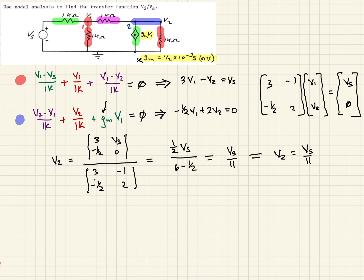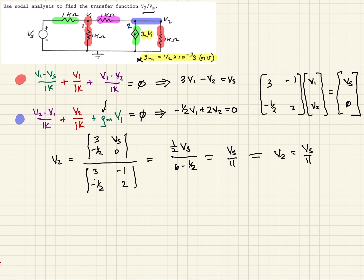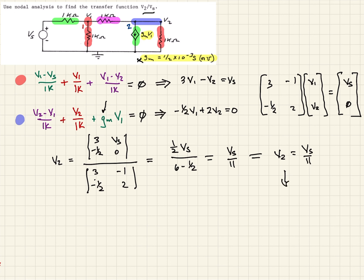This means that V2 is equal to Vs over 11. But we were asked to find V2 over Vs, the transfer function. We can do that pretty easily by just dividing both sides by Vs. So now V2 over Vs is equal to 1 over 11. This is the transfer function for this circuit. What that basically means is whatever power supply we put in for Vs, the output across these terminals is going to be 1 eleventh of whatever this value is.